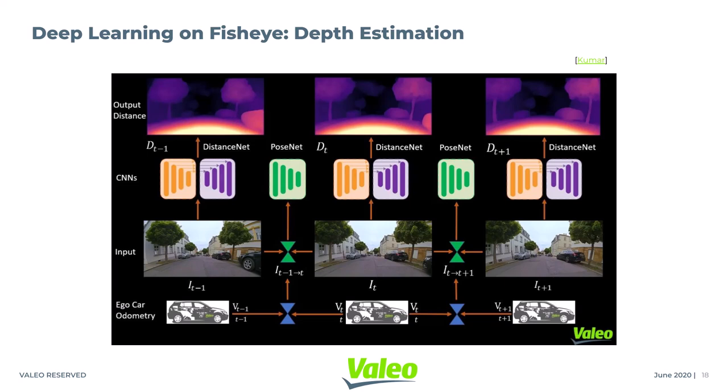We used deformable convolutional layers, super-resolution layers, pixel shuffling, smoothness constraints, and structural similarity losses to reach state-of-the-art performance. In the case of fisheye images, we used a fourth-order polynomial model with forward and inverse projections to project pixels to camera coordinates and back to pixel coordinates. We also experimented with unified camera models and enhanced unified camera models.